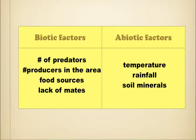We also talked about an environment, there's something called biotic factors and abiotic factors. How many predators are in the area, producers, food sources, anything that's alive is biotic. Anything that's not alive, like temperature, how much it rains, how many minerals in the soil are abiotic factors.